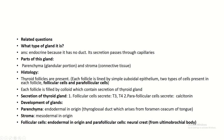Related questions asked in the surface anatomy exam: What type of gland is it? It is an endocrine gland — it has no duct and its secretion passes through capillaries. What are the parts of the gland? Parenchyma (the glandular portion) and stroma (connective tissue). The glandular portion contains thyroid follicles.